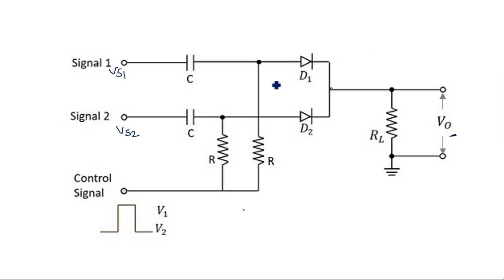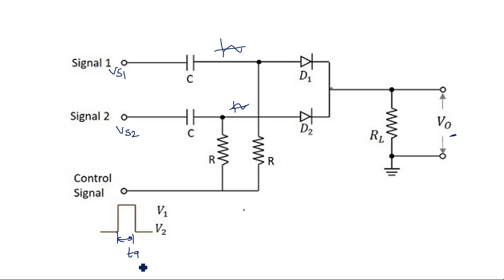The two input signals are mixed with a single control signal. The gating pulse has a time period TG which switches ON diodes D1 and D2 only during that particular duration; in the remaining periods they are in OFF state and there is no output. Whenever the diodes are in ON state due to the V1 voltage, the input is transmitted to the output.